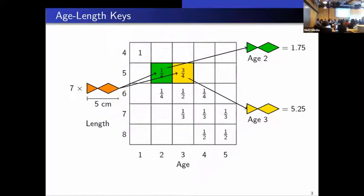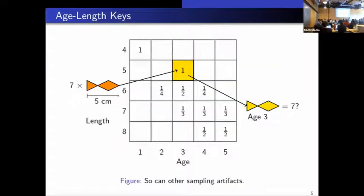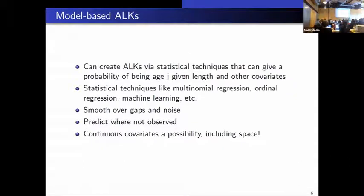But age-length keys, empirical age-length keys, can suffer from some problems, like what happens if you never age that length? What is the number at age for that length? Or you can run into sampling artifacts where the results might not be the most realistic.